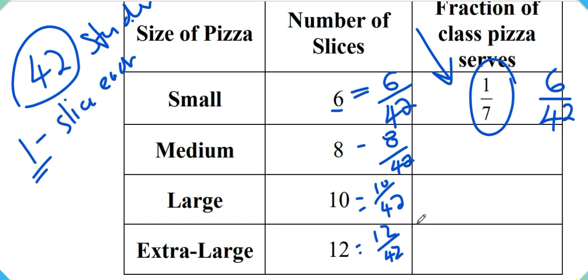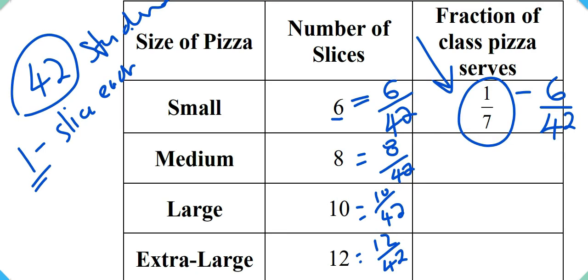These are answers, but since we have the information here simplified, we have 6 over 42 simplified to be 1 7th, we can also simplify the rest of these fractions.